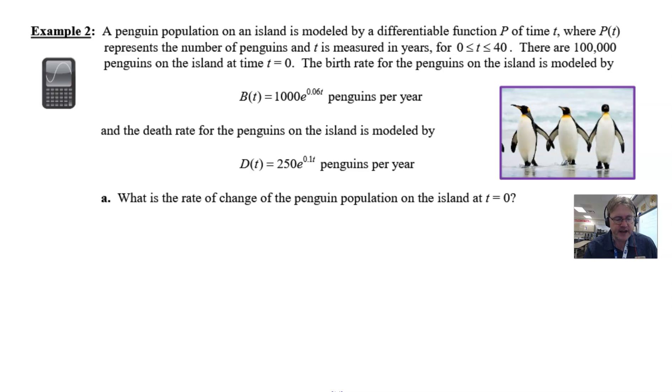There are 100,000 penguins on the island at time t equals zero, and we're given the birth rate for the penguins on the island that's modeled by this B(t) function: 1000e^(0.06t) penguins per year.